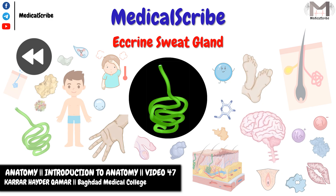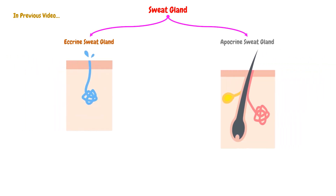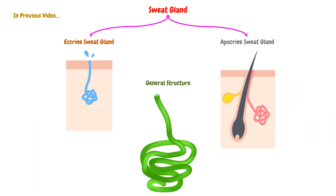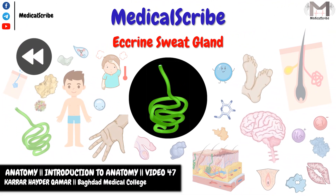Hello everyone in Medical Scribe. I'm Karar Haidar, a student at Baghdad Medical College. In the previous video, we talked about the sweat glands in general, and we classified these glands into two main types: the Eccrine sweat gland and the Apocrine sweat gland, and we explained the general structure of the sweat gland. Today we will talk about the first type, which is the Eccrine sweat gland.